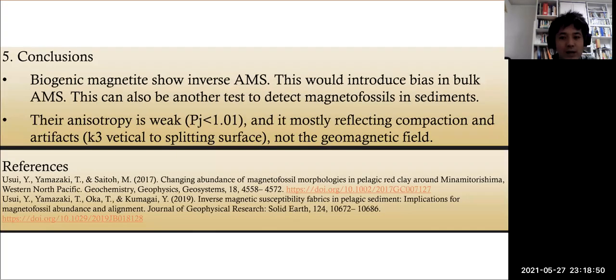So the conclusions are: biogenic magnetite shows inverse AMS, which would introduce bias in bulk AMS. And the anisotropy of biogenic magnetite in terms of AMS is weak, and it mostly reflects compaction and depositional fabric.